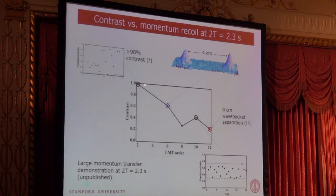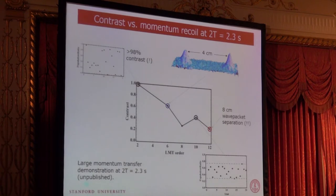As you march up this diagram, here's a six photon recoil picture taken at the top of the tower when the wave packets were separated — of course when I take a shot like that I wipe out the interference just to get the picture. The reason we don't have a picture at the 8-centimeter separation is because our camera field of view isn't big enough to capture both wave packets at the same time.